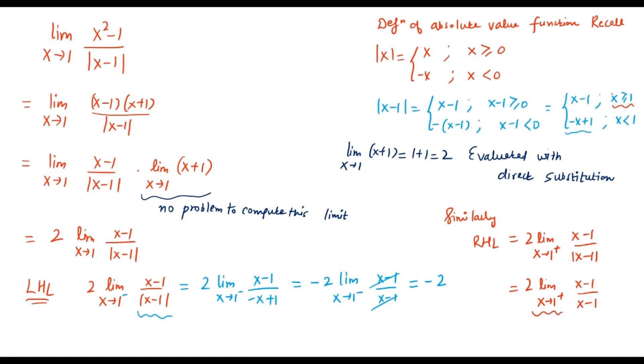Which is nothing but essentially equals to 2, because when x is greater than 1, you look at the definition of mod of (x minus 1), (x minus 1) is same as mod of (x minus 1), so we get right hand limit equals to 2.